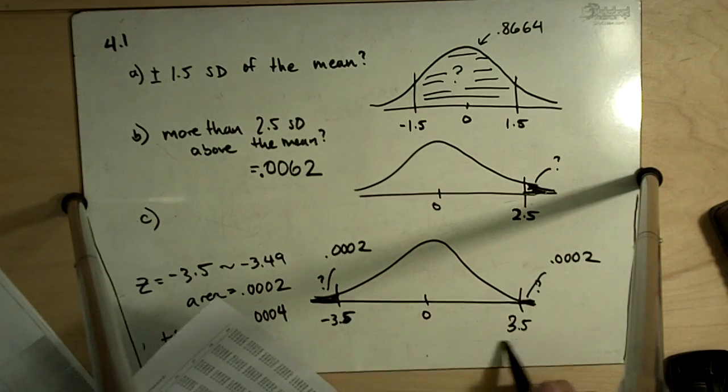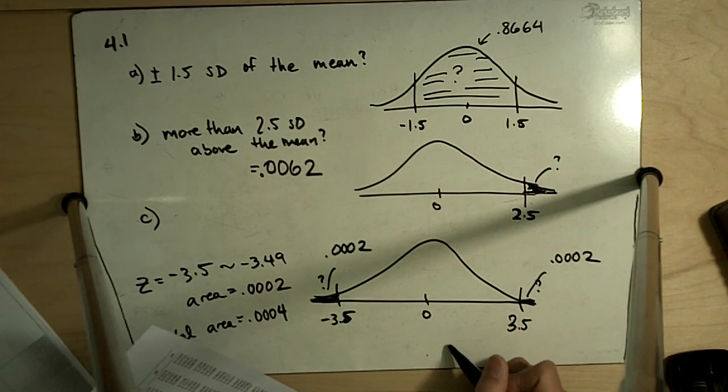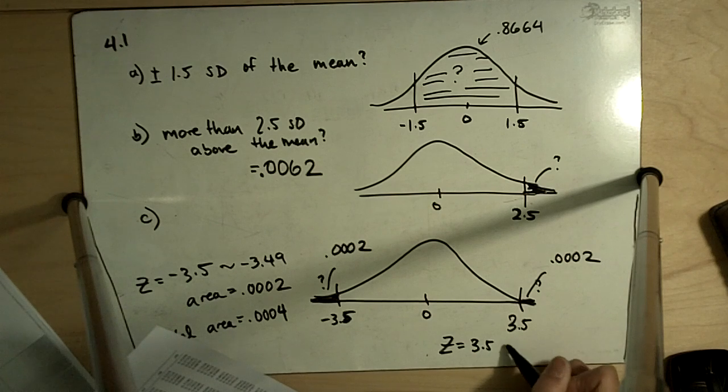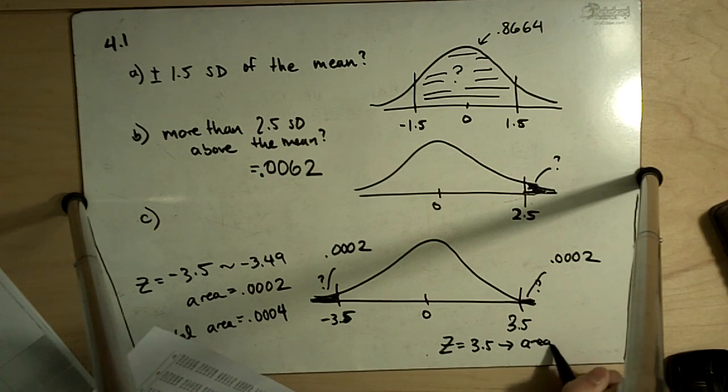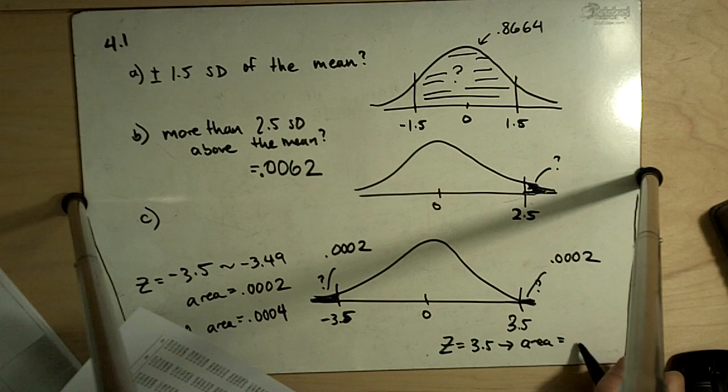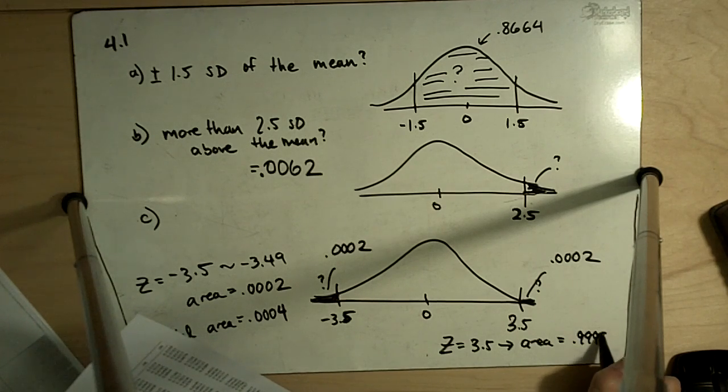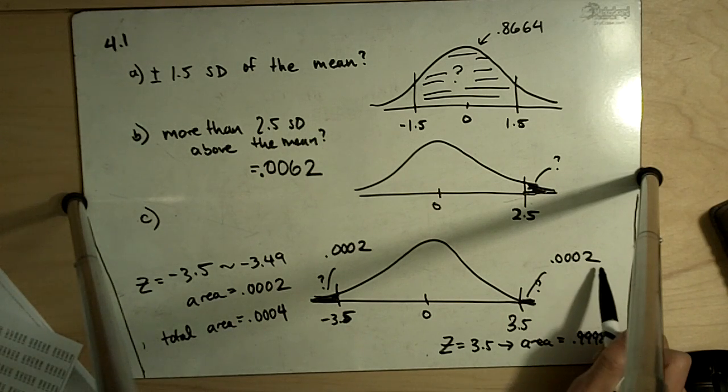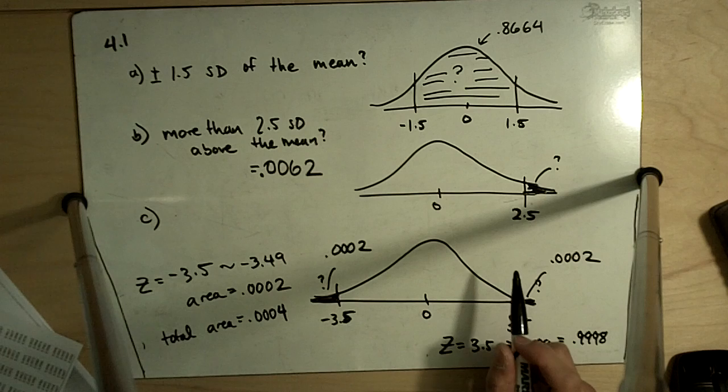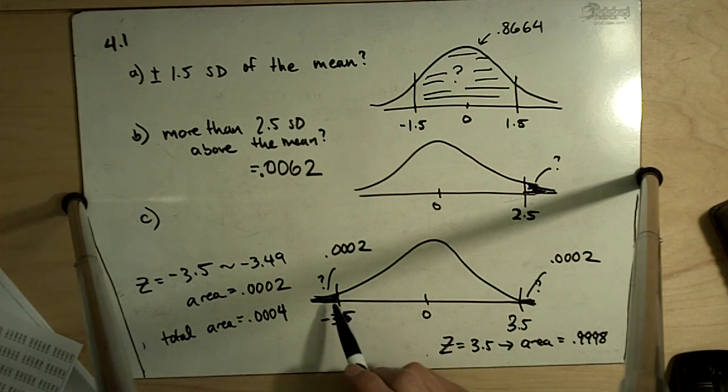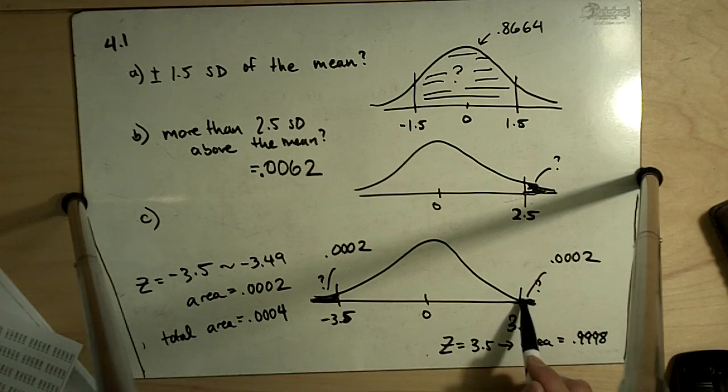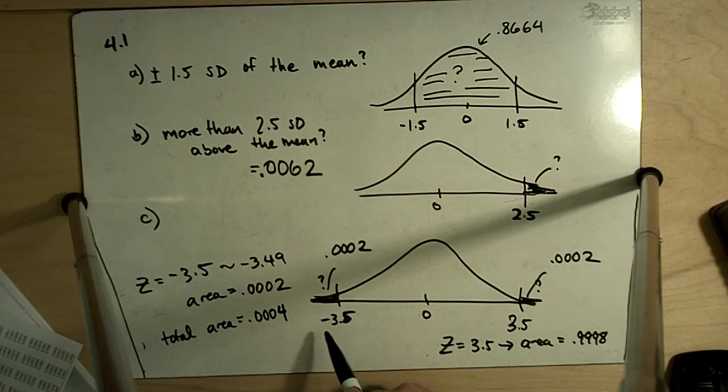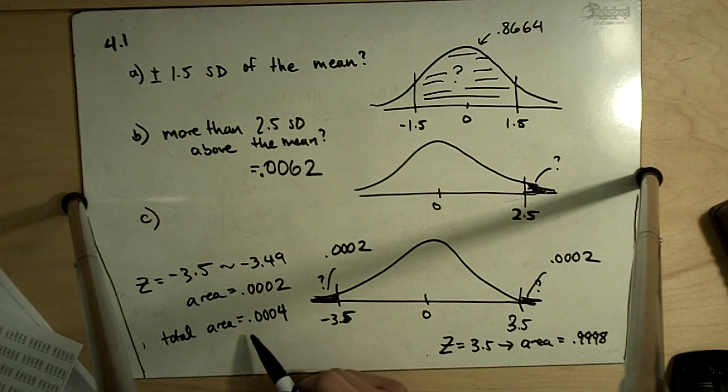Alternatively, I could have found the area to the left of negative 3.5. If Z is positive 3.5, the area to the left there is equal to 0.9998, which means the area to the right is 0.0002. I could have added those together. Just by using the symmetry and saying the area in the tails will be equal because we've got negative 3.5 here and positive 3.5, we had a little bit of a shortcut. And we have the total area in the tails there.